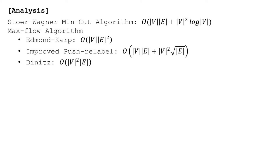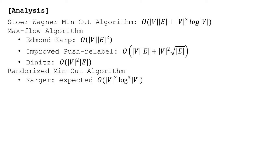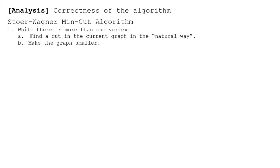There are various improvements giving better running times. There are also randomized min cut algorithms which output a min cut with high probability. Karger's is one such algorithm — you sample an edge proportional to its weight and merge endpoints, so higher-weight edges are more likely to be merged, similar to our earlier intuition. When comparing running times, note that the number of edges is at most the number of vertices squared, so the Stoer-Wagner algorithm is more efficient when there are only a few edges.